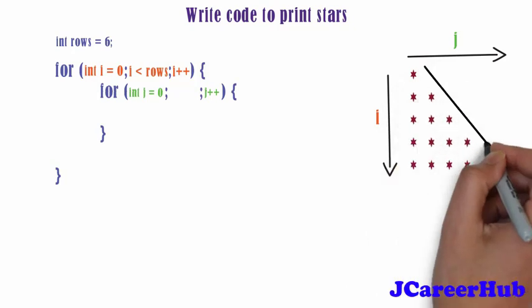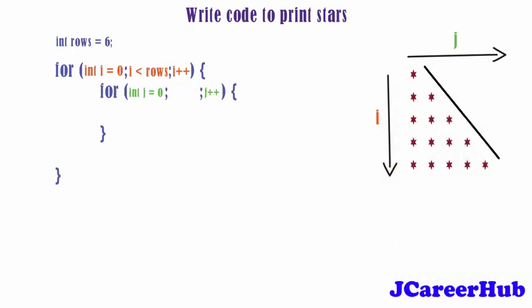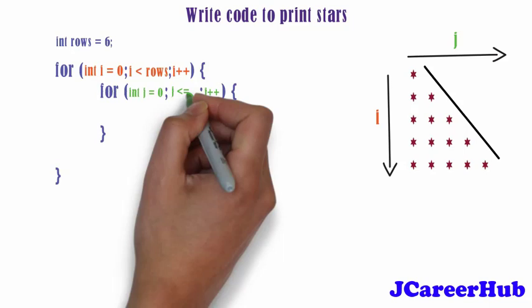Here you can observe J is less than I. So we will put this condition in inner for loop. Our program is ready.